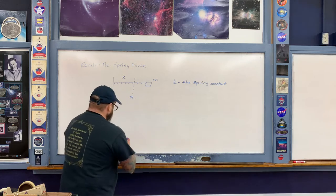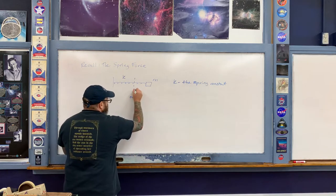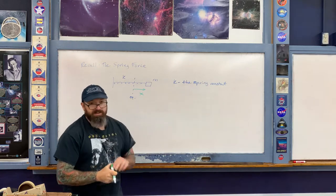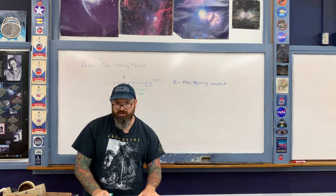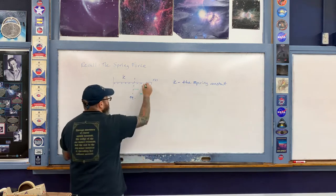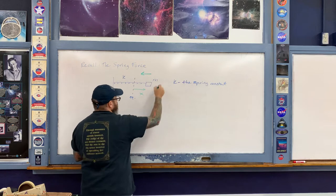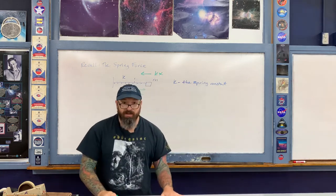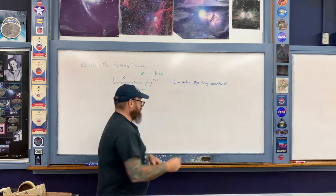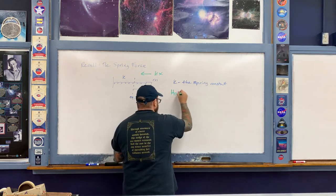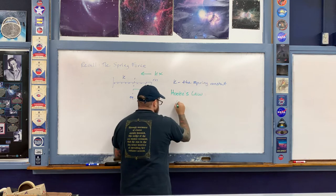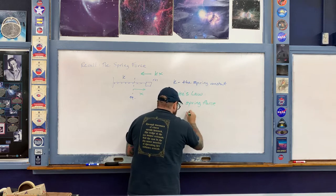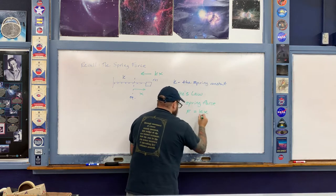The spring force is described as follows: the displacement from the equilibrium position is referred to as x. Whether we're stretching or compressing the spring from equilibrium, the spring force always tries to bring the mass back towards the equilibrium position. The magnitude of the spring force is described by Hooke's law: the magnitude of the spring force is k times x.